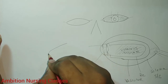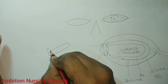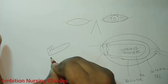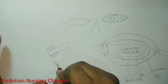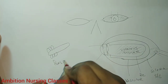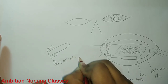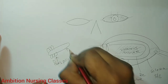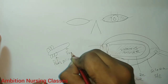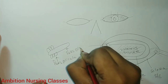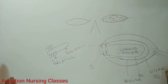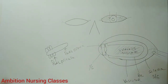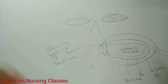Now remember, I'm drawing the ciliary body in more detail. The ciliary body has folds — this whole portion is known as pars plicata (plicata means folds), and this is pars plana. These are the two structural parts of the ciliary body.